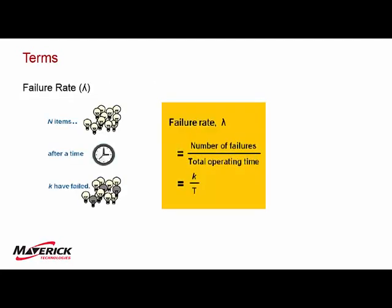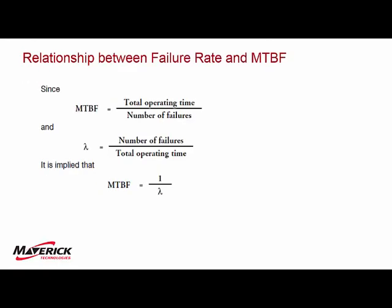Another term is failure rate. Failure rate is generally used for more components. Say you have 100 light bulbs and over 1,000 hours, five of them have failed - that's a failure rate. How many failures you had over your total operating time. These are kind of two big terms. They mean the same things but in different ways. They're reciprocal to each other. MTBF is total operating time divided by the number of failures, and failure rate is number of failures divided by the total operating time. So it's implied that they're reciprocal, which is how I'd use that 75 MTBF to give you the failure rate, which is what you need for initiating events.